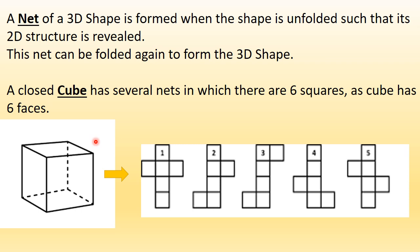You can see this 3D shape which is a cube. Now what is a net? A net of a 3D shape is formed when the shape is unfolded such that its 2D structure is revealed. For example, you can see this cube — if I just open up this cube, what would you see? You would see its net.